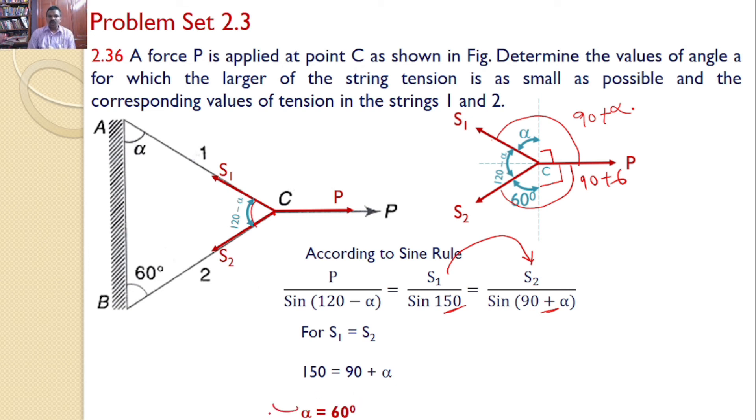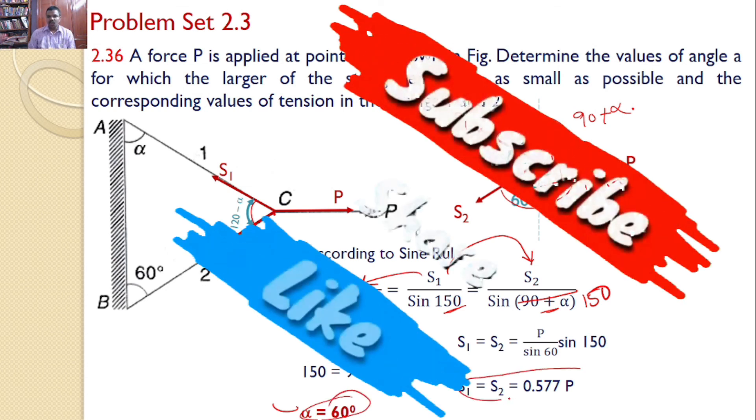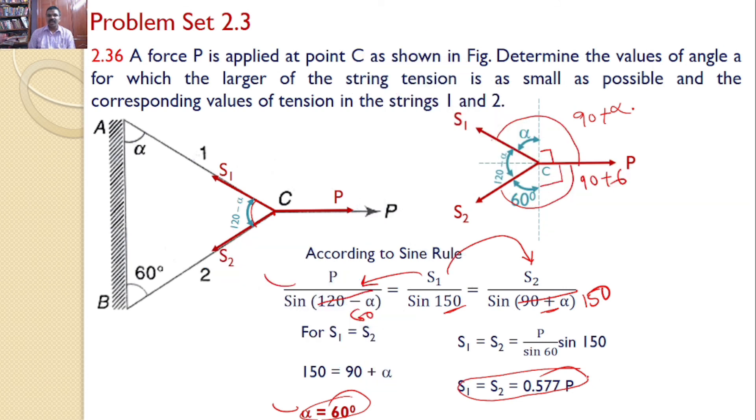Once you know that this alpha is equal to 60 degrees, I can substitute this alpha in this equation and I can find the tensions in the strings S1 and S2. Just substitute alpha is equal to 60 degrees. So this becomes sine 150 and this becomes sine 60. Hence I can write the equation S1 is equal to S2 is equal to by comparing these two equations. S1 is equal to S2 is equal to P by sine 60 into sine 150 or S1 is equal to S2 is equal to 0.577 P. Hence alpha is equal to 60 degrees and S1 is equal to S2 is equal to 0.577 P. These two are the answers for this problem.